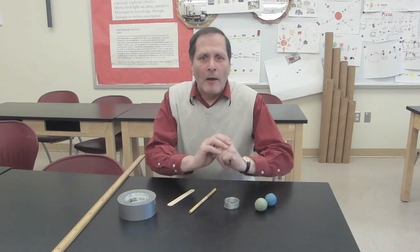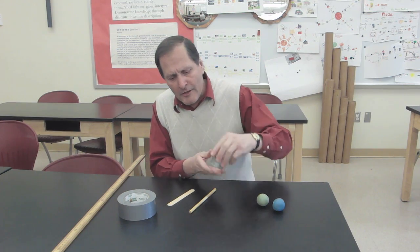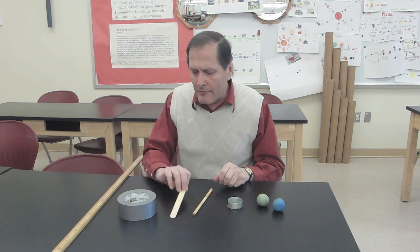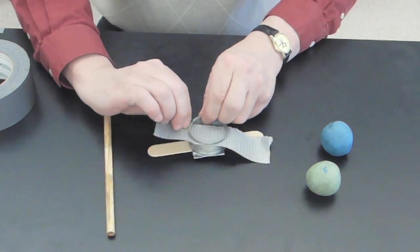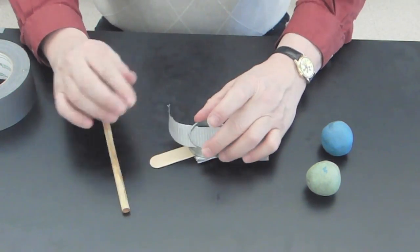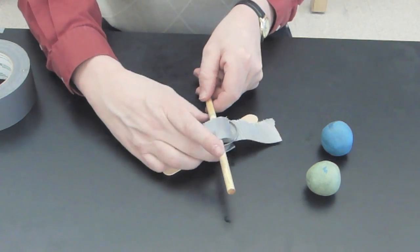Now we can build one of these Wilberforce pendulums with some simple materials. There's two balls of clay, a slinky spring, a wooden dowel, tongue depressor, duct tape, and a meter stick to attach it to. This started with a cheap slinky that I cut in half. Now I'm attaching the tongue depressor and the wooden dowel to the ends of it simply using the duct tape.